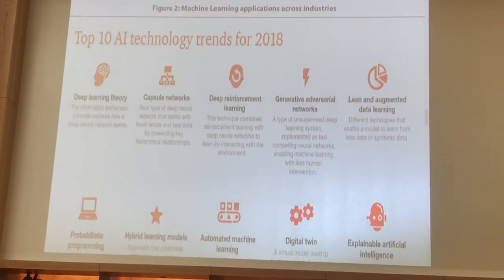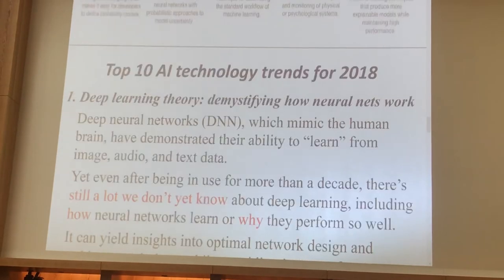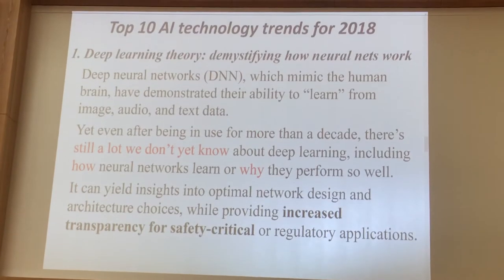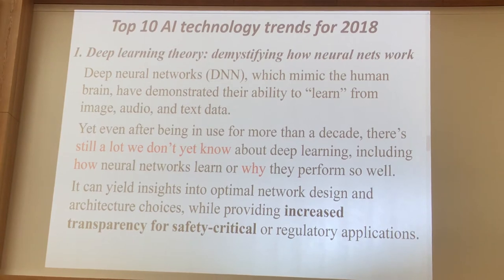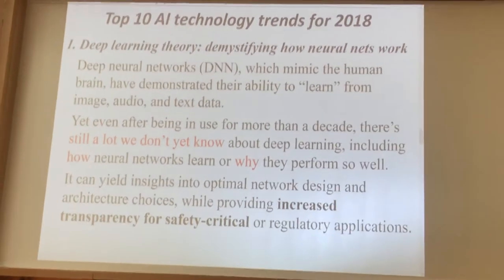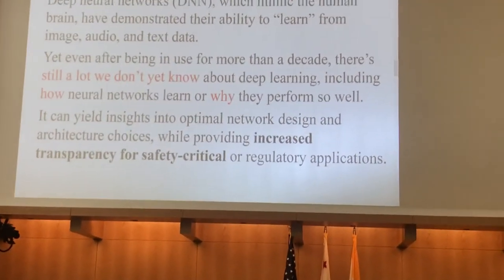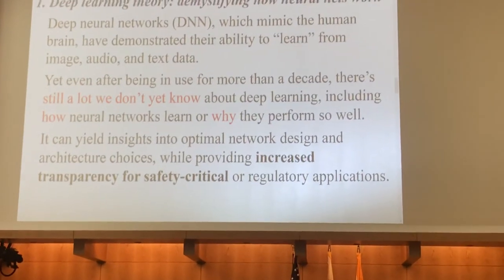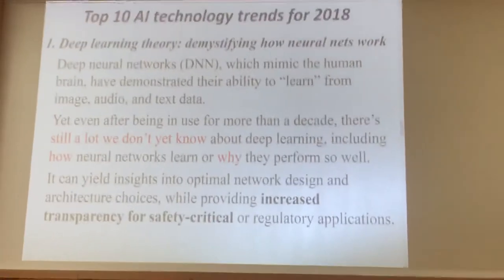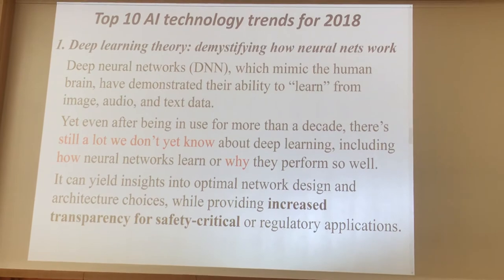Starting with deep learning: one thing about AI that people discuss is that a machine may come up with a conclusion or recommendation and people really don't know how the machine arrived at that decision. The how and why are still being figured out. One of the objectives people are working on is to try and understand the algorithms better — not from a computational standpoint, but understanding how the machine actually arrives at its recommendations or answers.